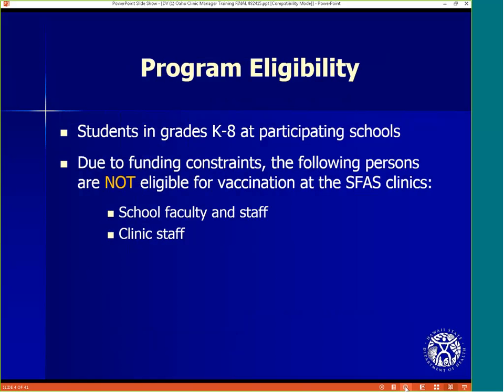Before we go more in-depth with activities that occur during each phase, it is important to mention a significant change in program eligibility. Students in grades kindergarten through eight at participating schools are still eligible, but due to funding constraints, adults are not able to receive vaccines through this program. This includes school faculty and staff and clinic staff. School faculty and staff and clinic staff are not eligible for vaccination at the Stop Flu at School clinics.